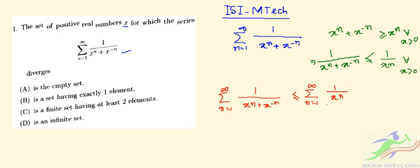This summation is less than infinity, so we can conclude that the given series is convergent for all x > 0.